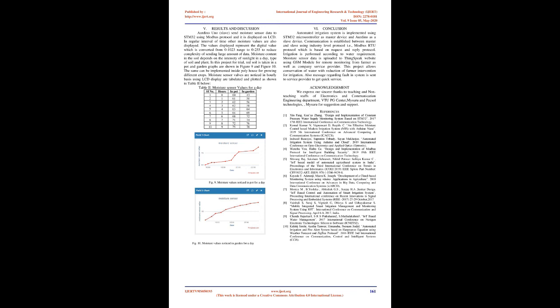Conclusion: The automated irrigation system is implemented using an STM32 microcontroller as the master device and Arduino as the slave device. Communication is established between master and slave using the industry-level Modbus RTU protocol, which is based on a request and reply mechanism. Irrigation is performed according to water requirement. Moisture sensor data is uploaded to the ThingSpeak website using a GSM module for remote monitoring by the farmer and service provider. This project allows conservation of water with reduction of farmer intervention for irrigation. Messages regarding faults in the system are also sent to the service provider for quick service.